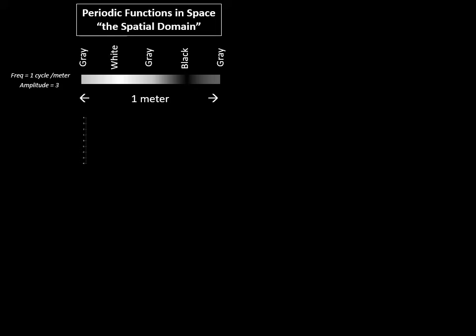Then becomes black, and becomes gray again. So it's gone over one full cycle in color variation over a unit of distance of one meter. So in the spatial domain, it would be said that this line has a frequency of one cycle per meter.